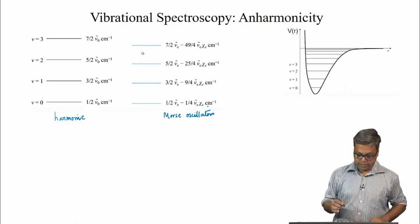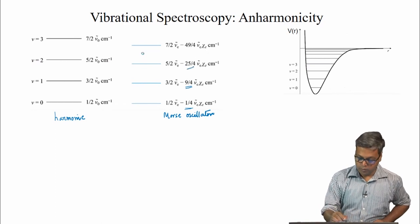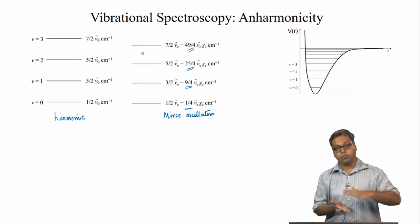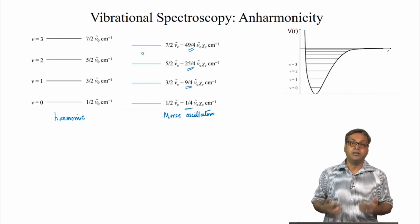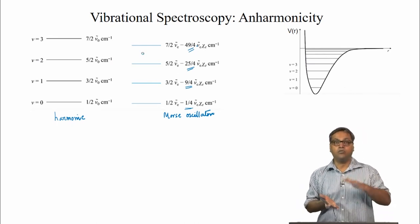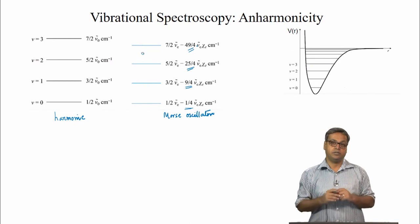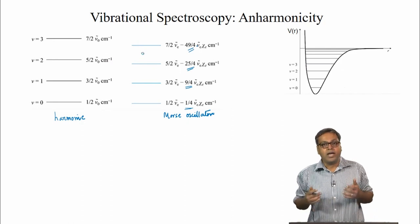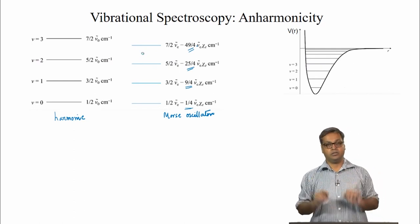The lines of the energy levels on the right-hand side are steadily getting closer and closer together as the vibrational quantum number increases, due to the (v + 1/2) squared dependence of the anharmonic term. We can see that for v equals 0 we have 1/4, increasing to 9/4 for v equals 1, to 25/4, to 49/4. So the energy levels are coming closer and closer. As we go to higher vibrational energies, the energy levels get closer and closer together as we approach the dissociation limit.